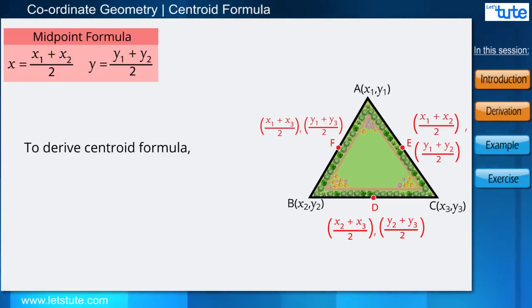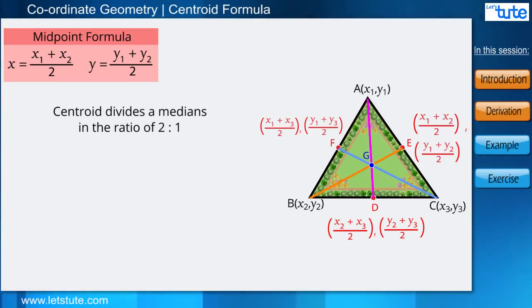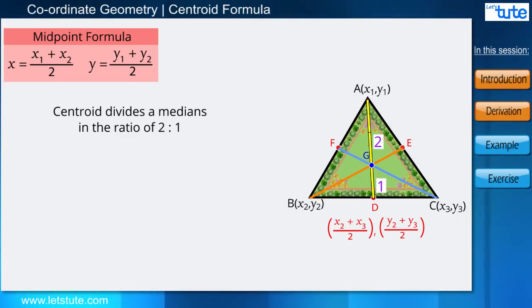Now, in order to derive the formula for centroid, you can use any of these midpoints. It is not necessary that you have to use point D only. As said earlier, the centroid of a triangle divides the median in the ratio of 2 is to 1. In this case, AG will be 2 and GD will be 1. Therefore, AG is to GD will be equal to 2 is to 1.